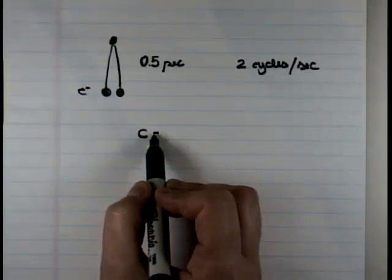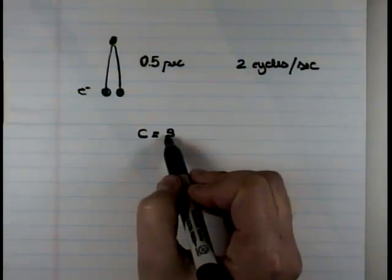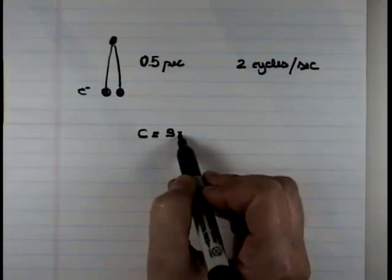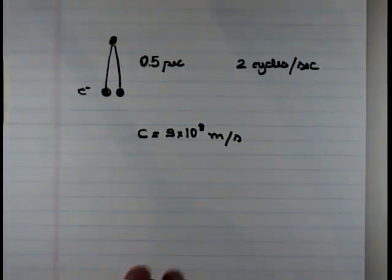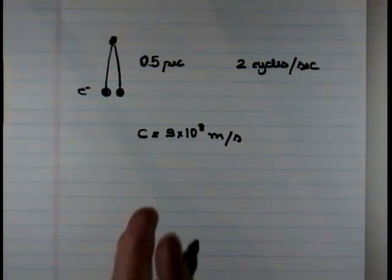And because we're dealing with light, light travels at the speed C, which equals 3 times 10 to the 8 meters per second. Light of any wavelength travels at that same speed.